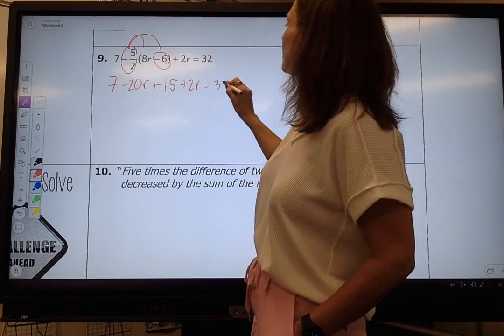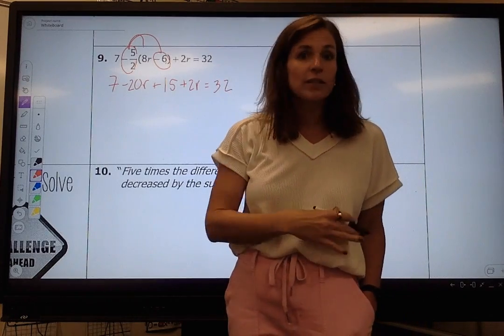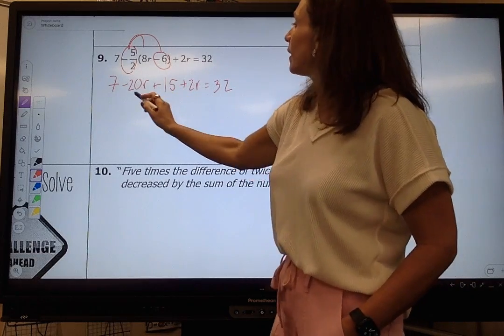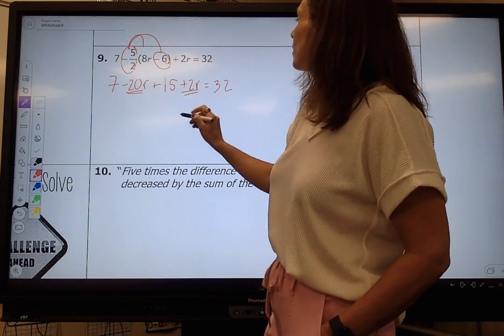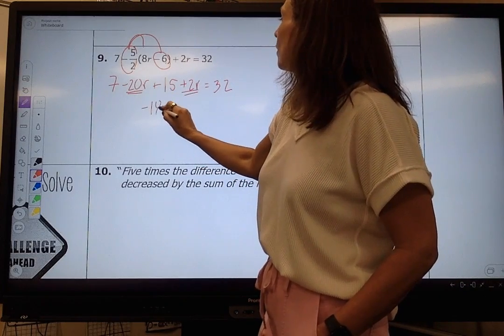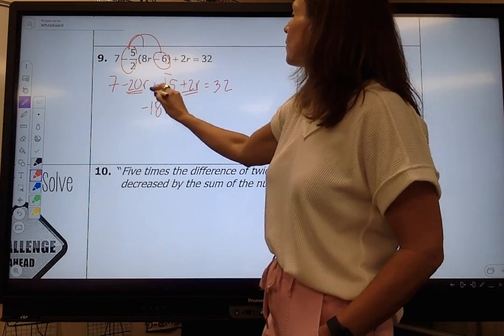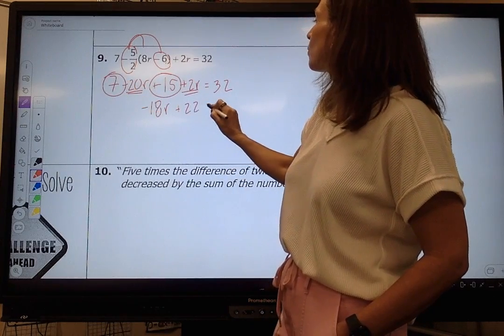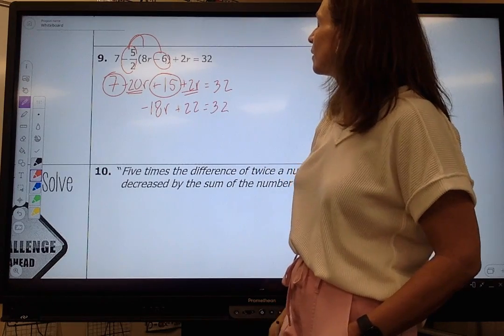That is not a big deal to have fractions. You're going to see them all year long, so you might as well get good at it. Now we're just going to combine like terms. So negative 20R and positive 2R is negative 18R. You have more negatives than positives. And you have a positive 15 and a positive 7, which is a positive 22. And I set that equal to 32.